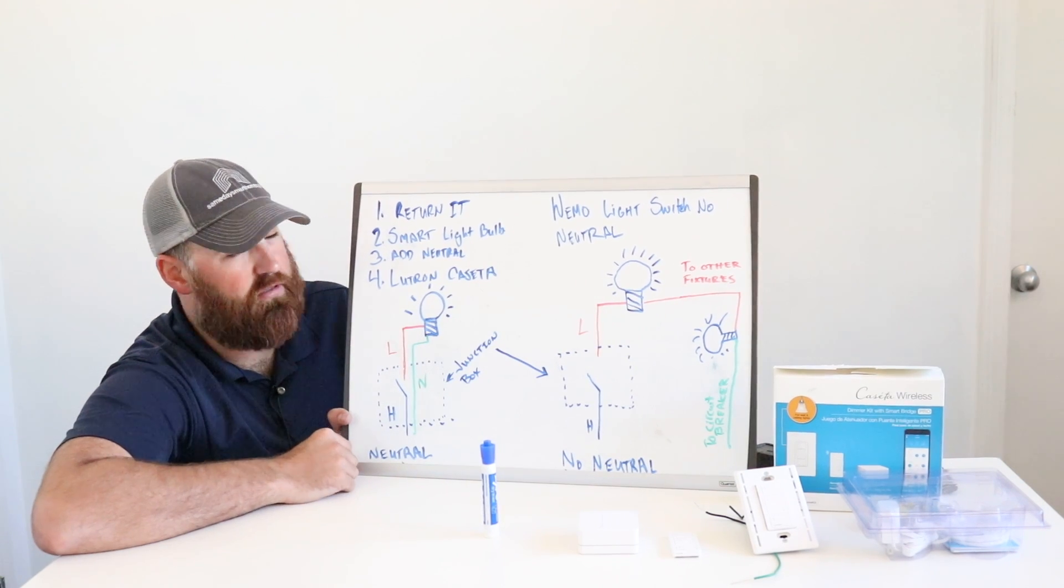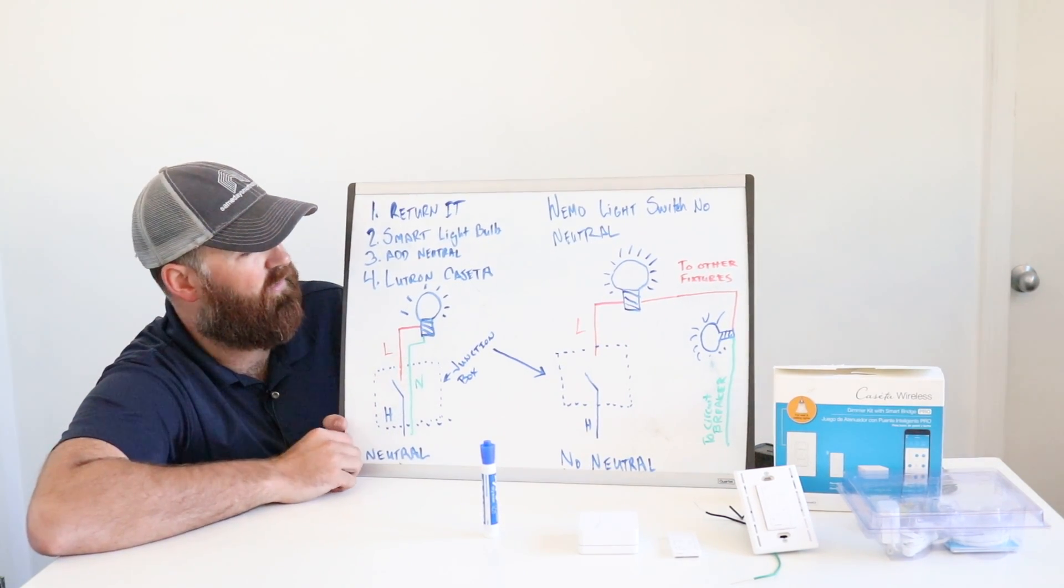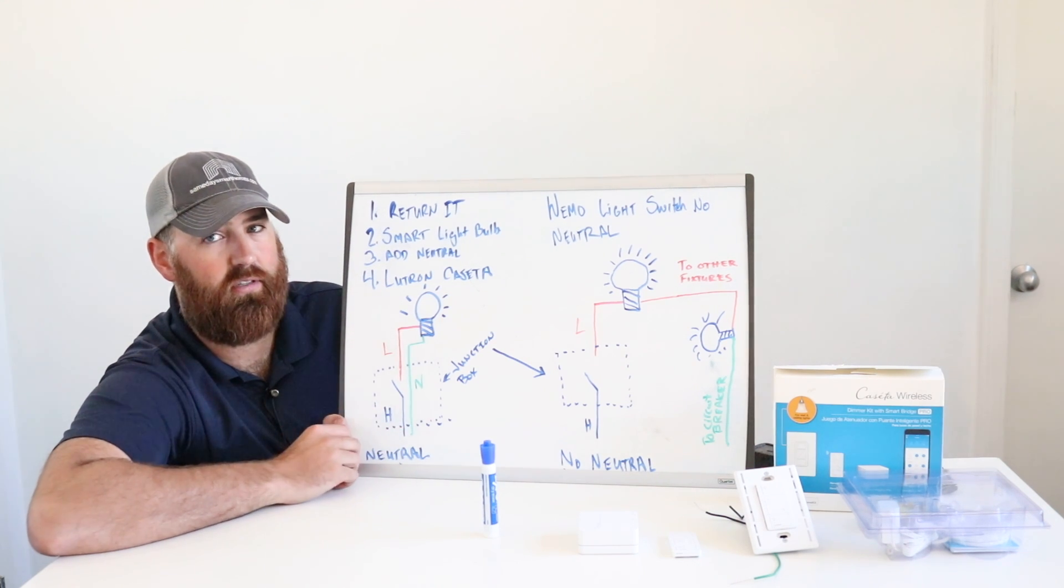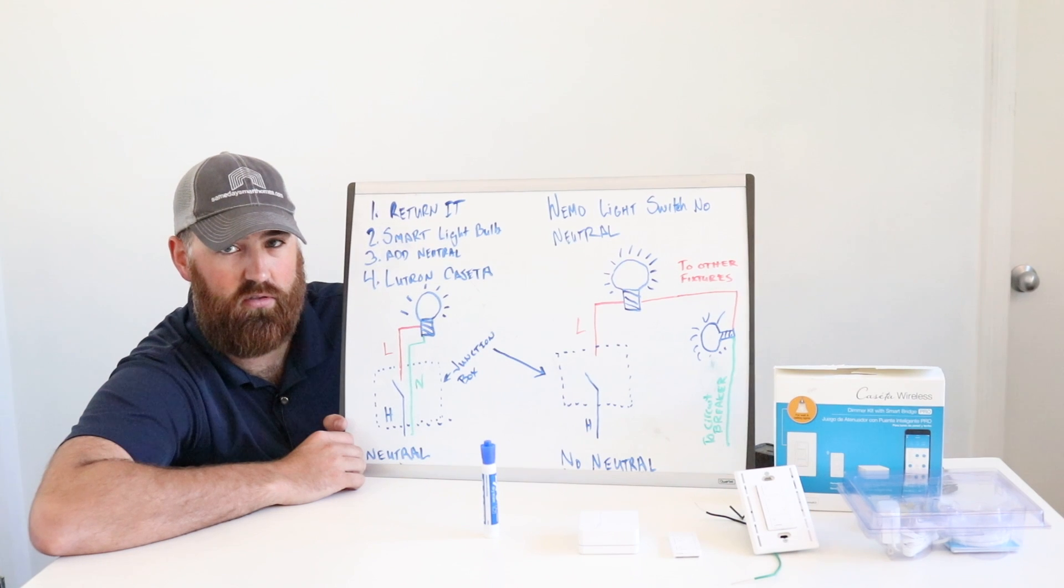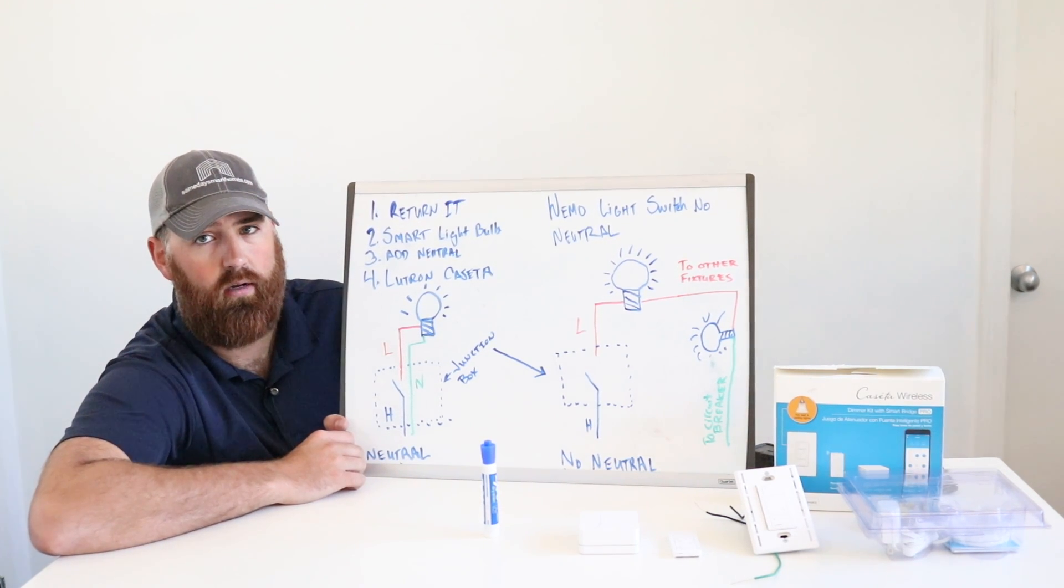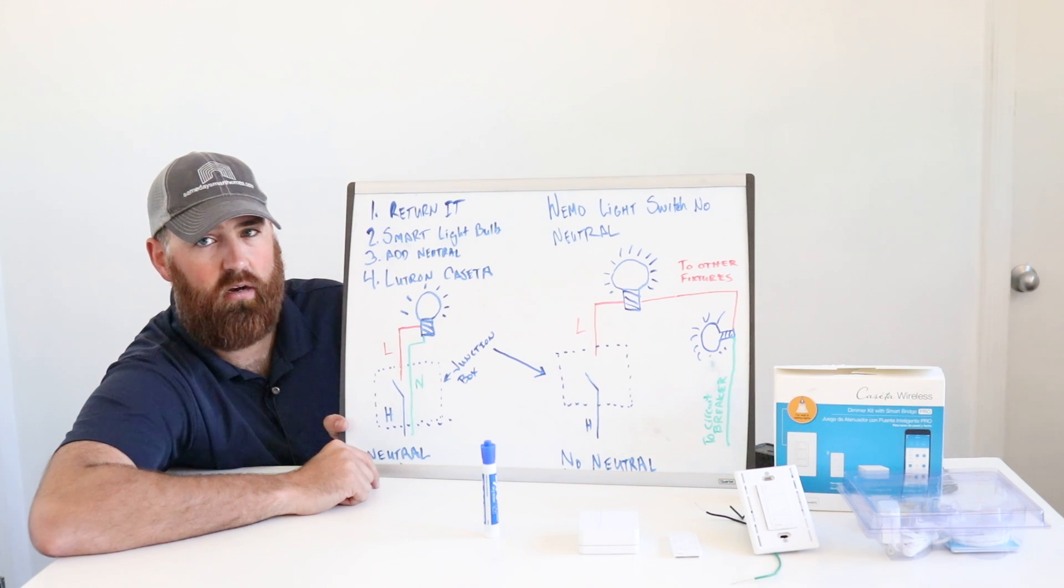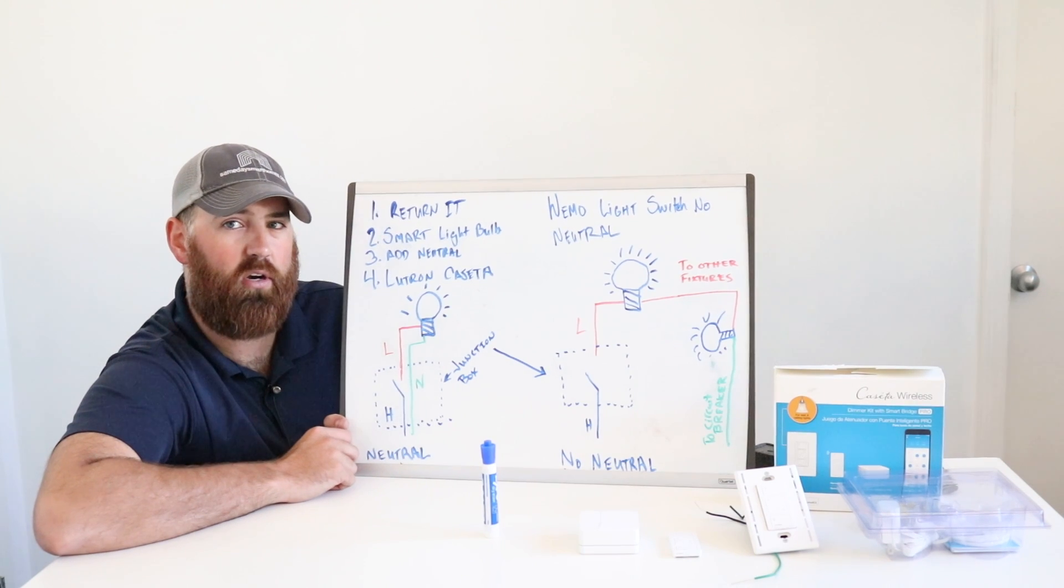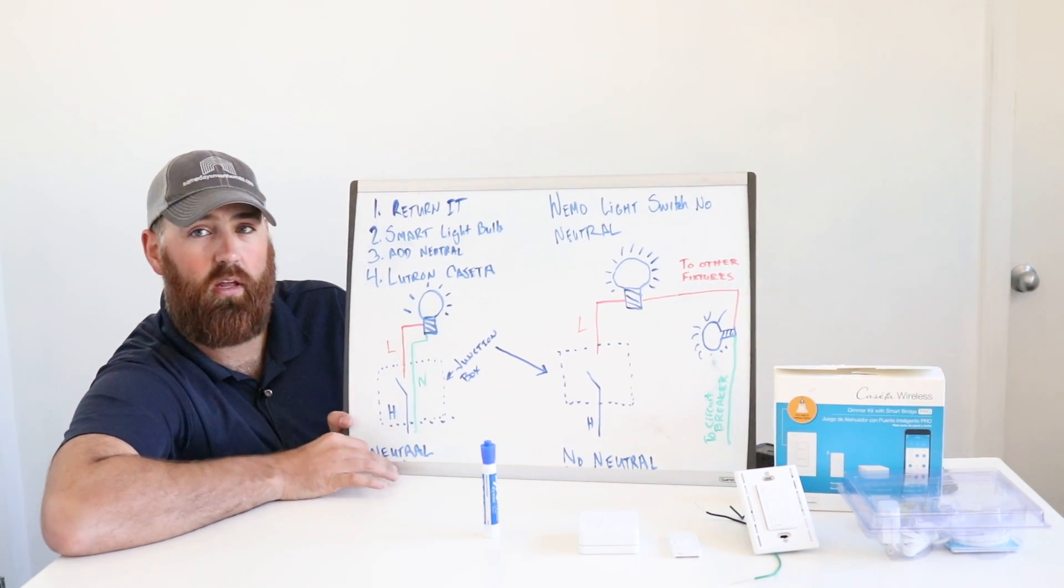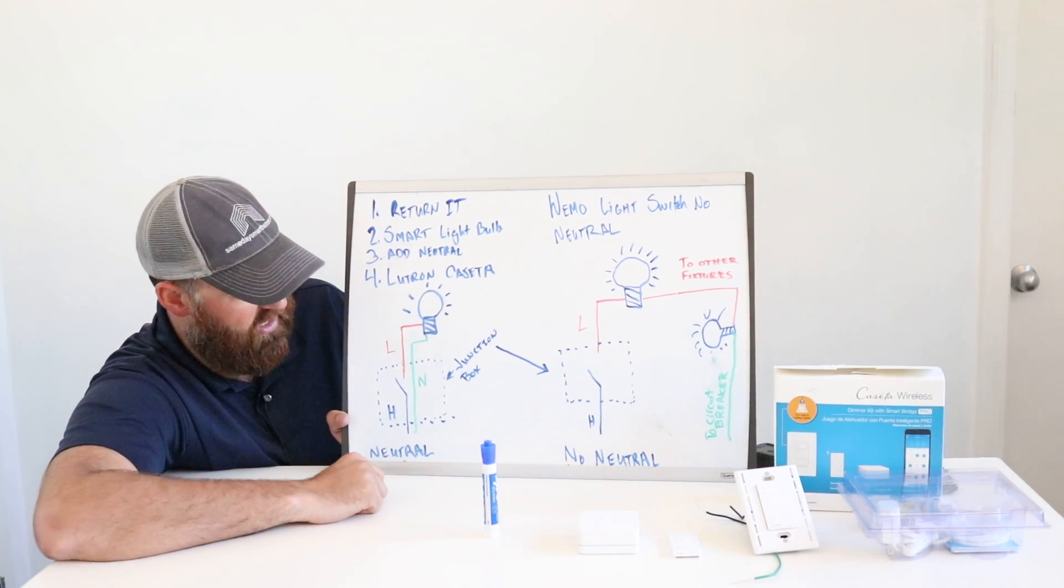So you got a couple options and we're going to go with just one. You should probably do this right off the bat here. You should return this. And why is that? Well, because Wemo light switches do require a neutral wire. And if you don't have a neutral wire, it's going to be kind of complicated to get a neutral wire in there unless you are very handy or you're an electrician or you just like big projects. You can do it, but it's not super easy. And we'll explain why here.